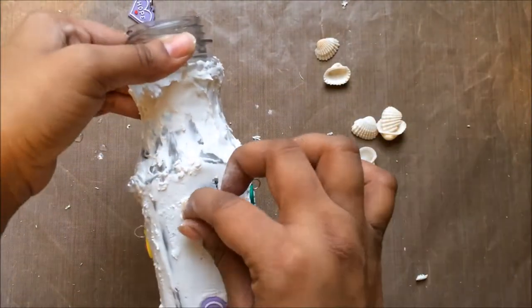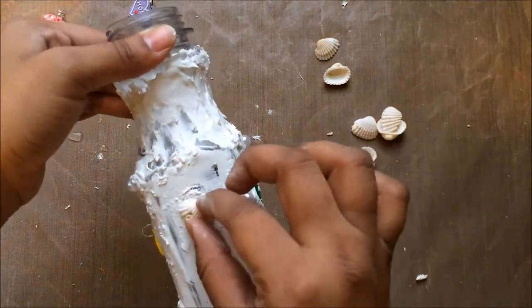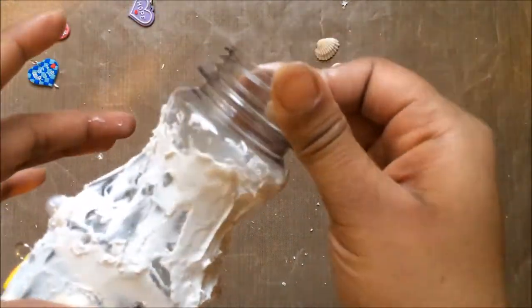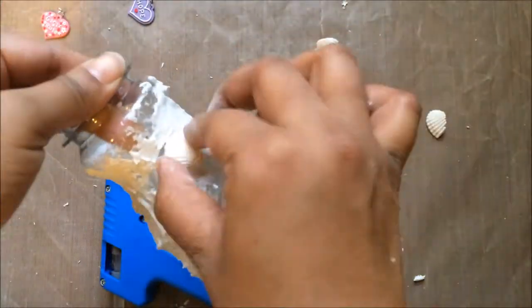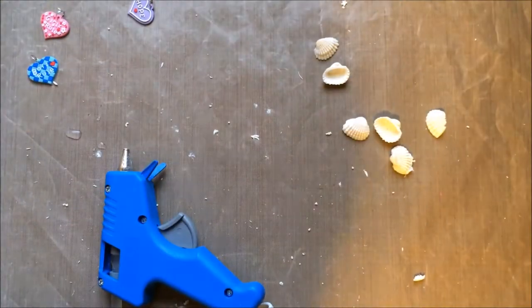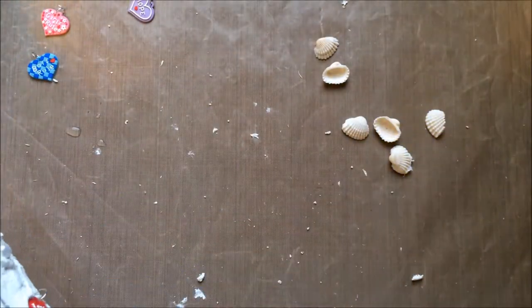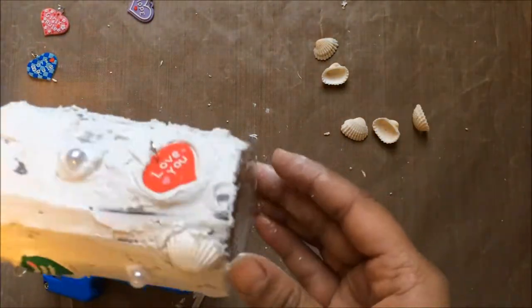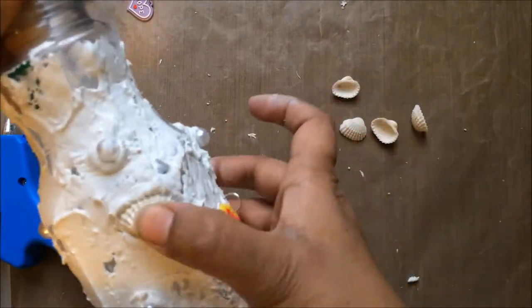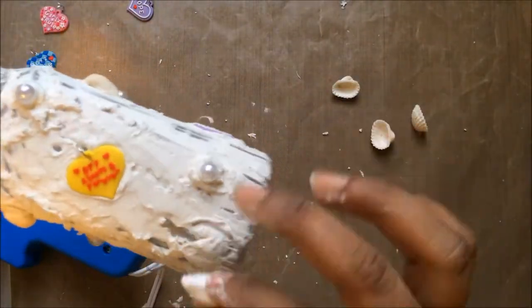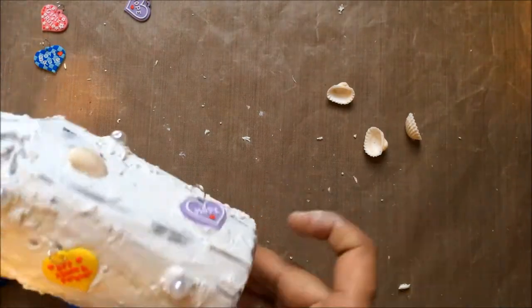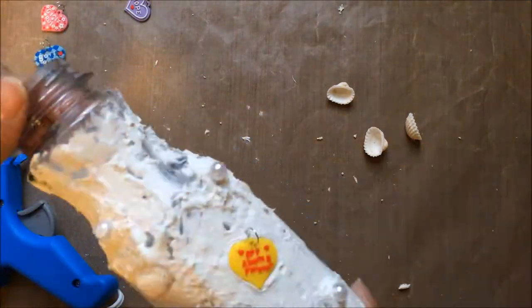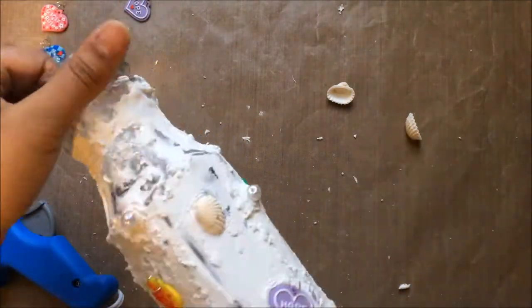Now I'm adding some sea shells I had. I couldn't apply them like the pearls, so I thought it would be good to apply them with hot glue because the hot glue is going to make it sturdier. I'm just filling up the space between the pearls and the charms.